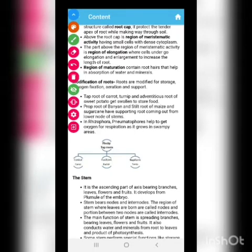So tap root of carrot, turnip, adventitious root of sweet potato, they get swollen up just because of storing food material in them. There are certain prop roots which you must have seen in banyan tree or old banyan tree. And there are certain stilt roots also of maize at the base of the maize plant, or the sugarcane plant also, you must have seen.